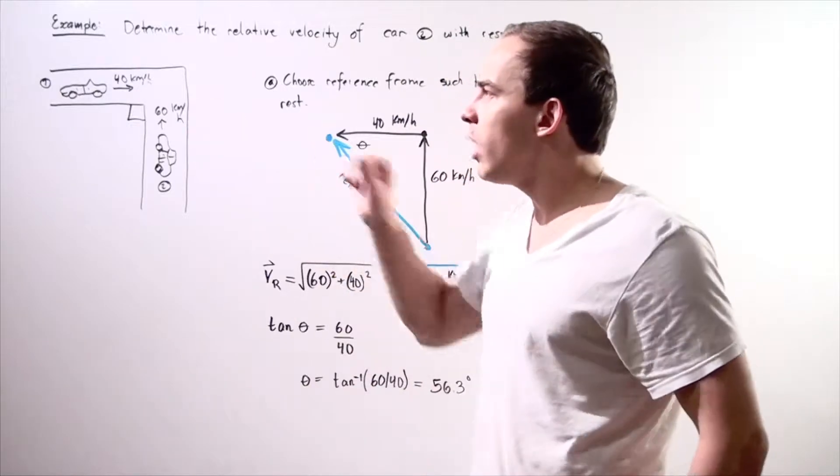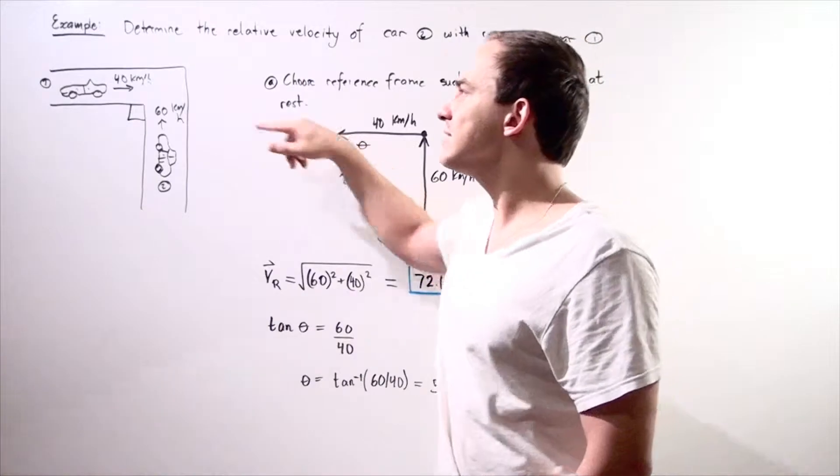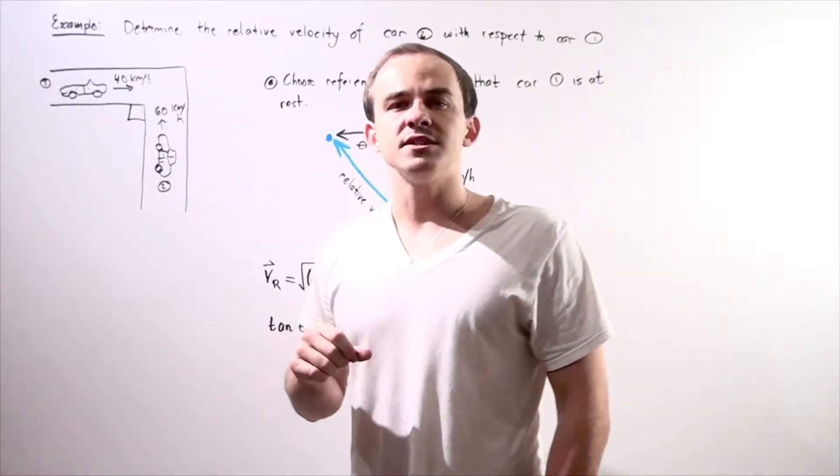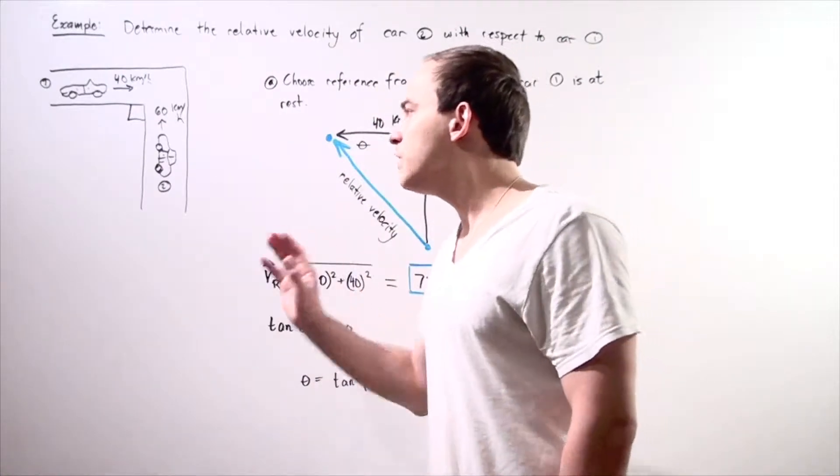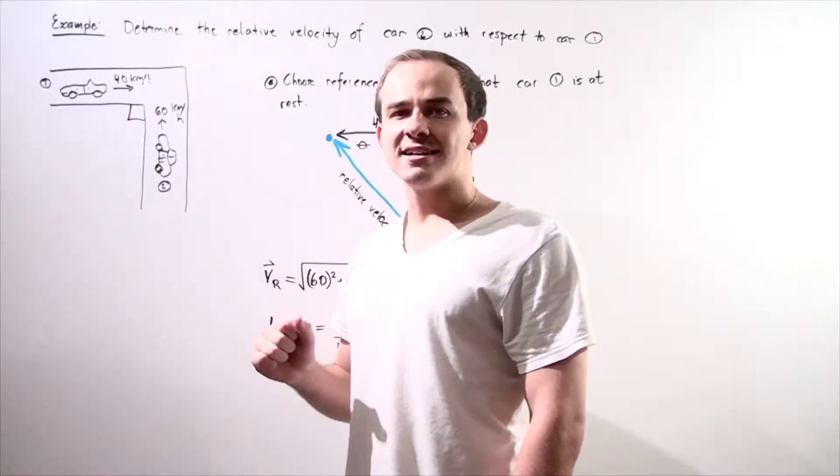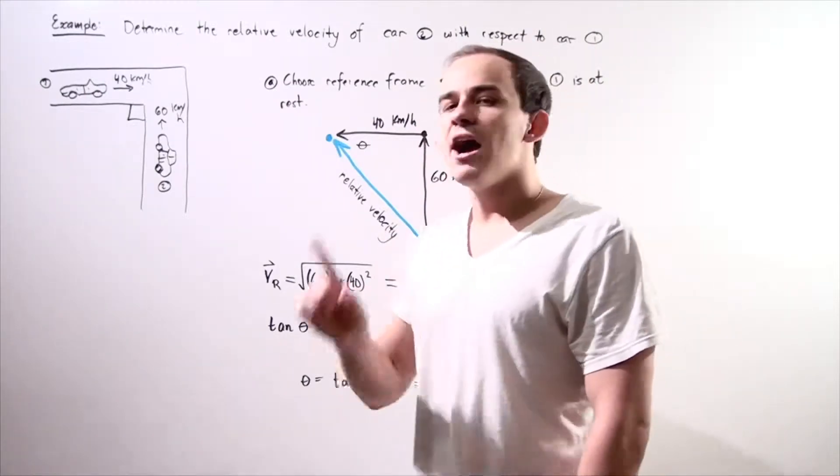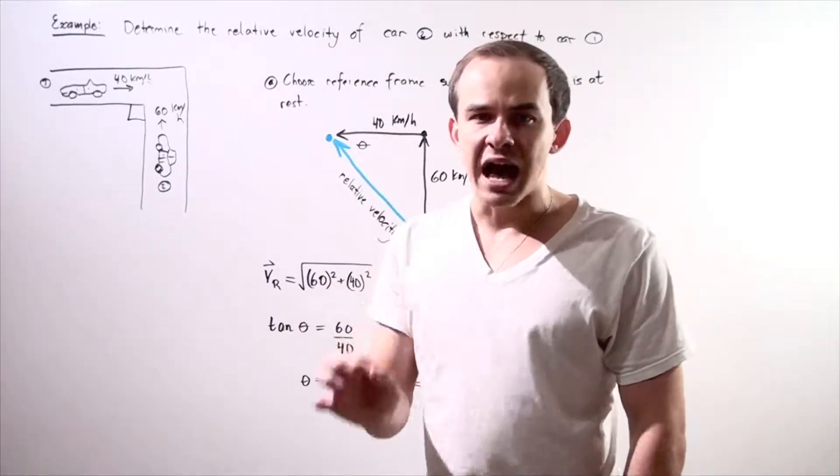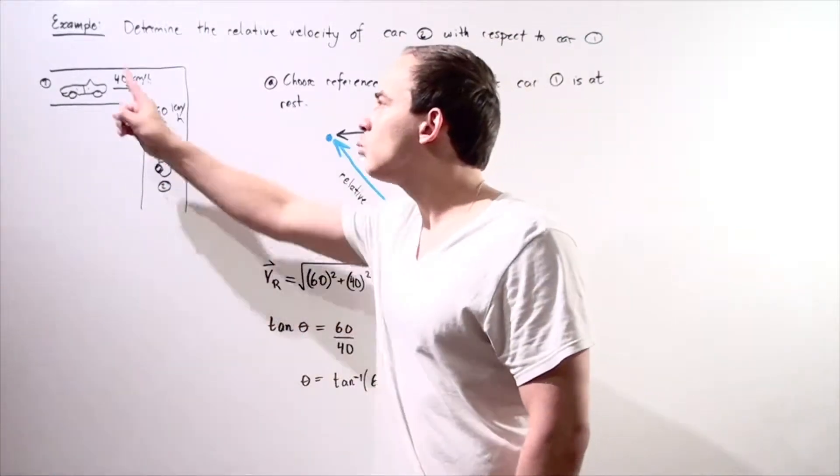So we have car one that's moving along the x-axis in the positive direction with a velocity of 40 kilometers an hour and likewise we have car two that is moving upward along the y-axis with a velocity of 60 kilometers an hour. Now we want to find what the relative velocity of car two is with respect to car one.